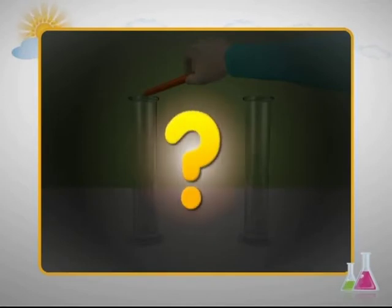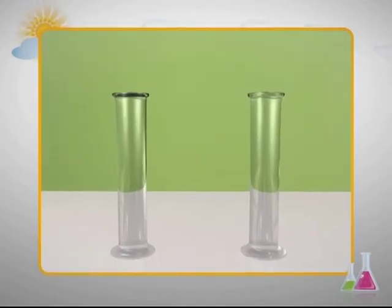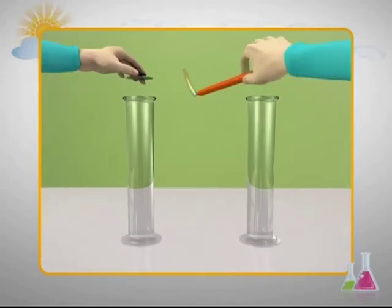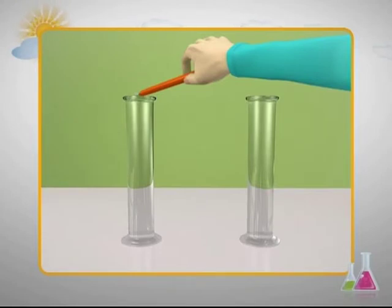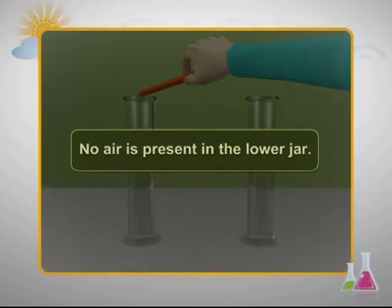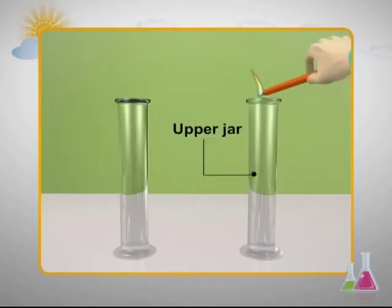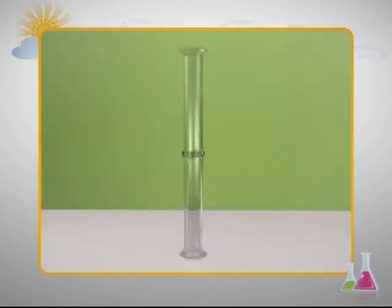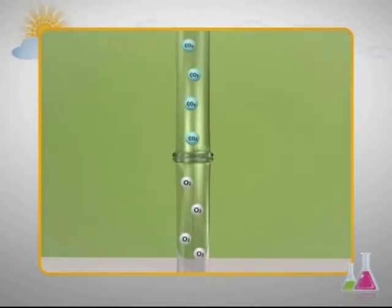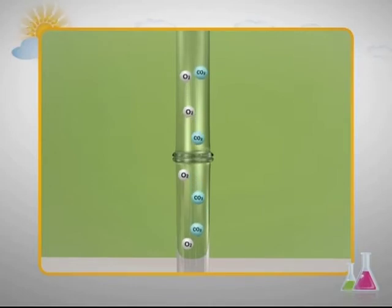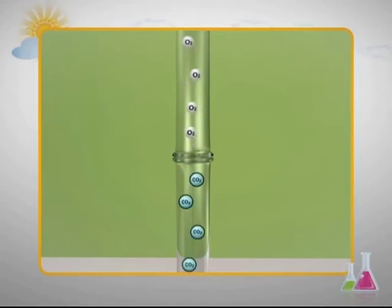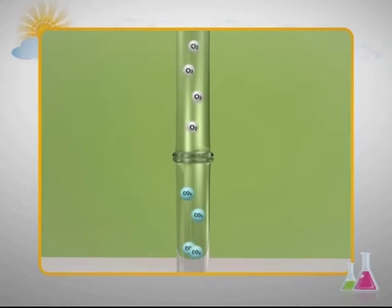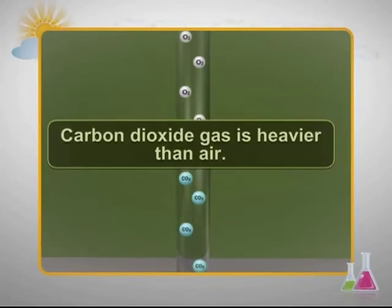What inferences can you draw from it? You all know that air supports combustion. The extinguishing of the candle in the lower jar confirms that the lower jar does not contain any air. Whereas the burning of candle in the upper jar indicates the presence of air in it. During this activity, the carbon dioxide gas originally present in the upper jar moves to the lower jar. At the same time, the air originally present in the lower jar moves to the upper jar, since carbon dioxide gas is moving down by displacing the air. It can be inferred that carbon dioxide gas is heavier than air.